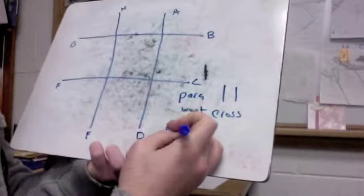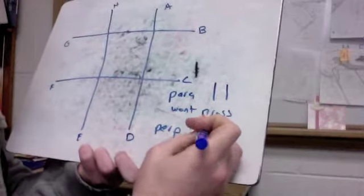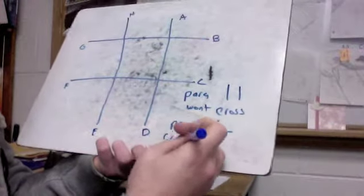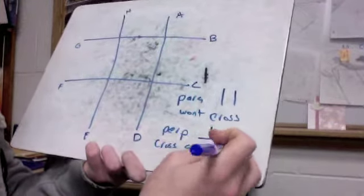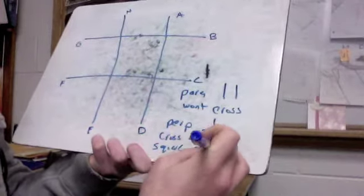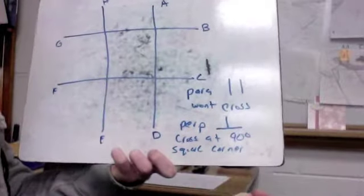Perpendicular we're going to use a symbol like that and it just means cross at 90 degrees or makes a square corner. Either one of those is fine.